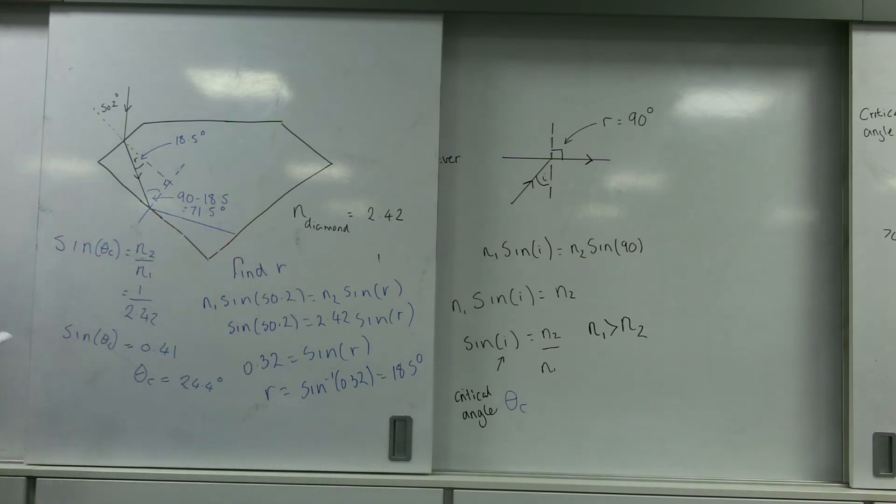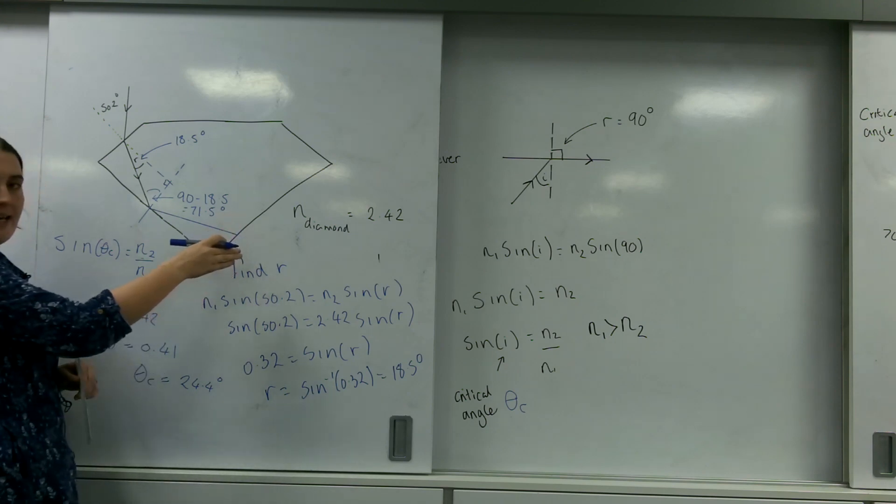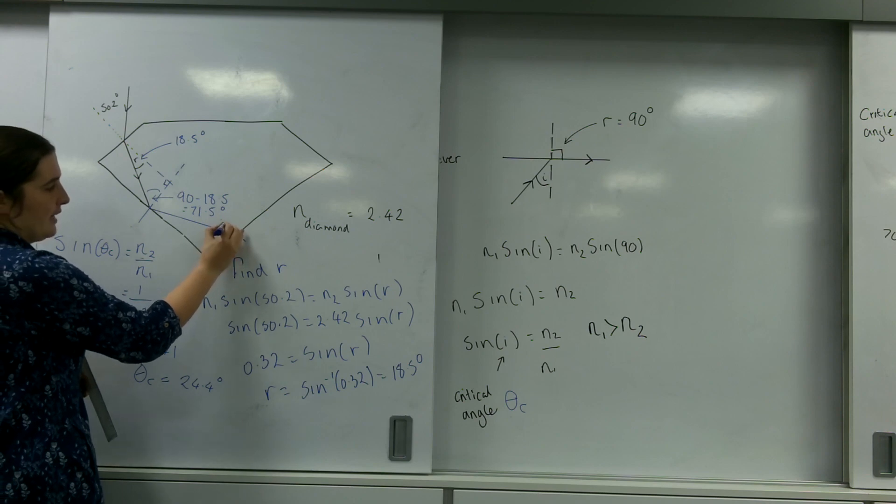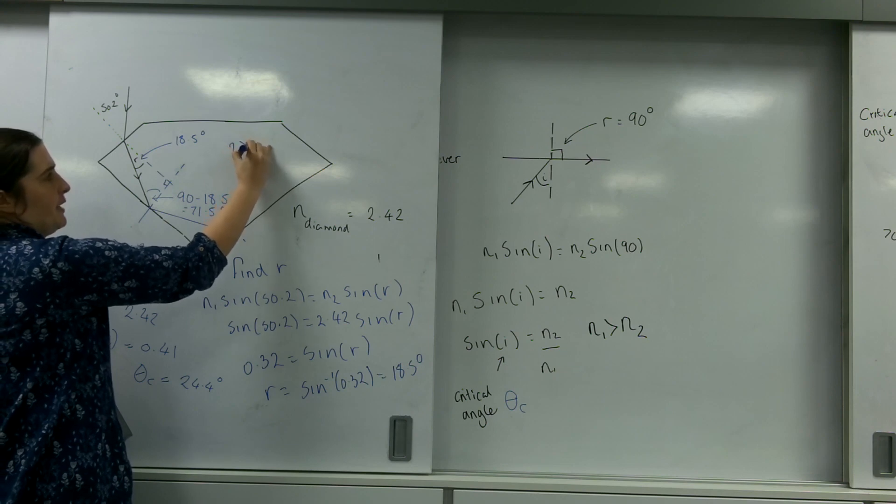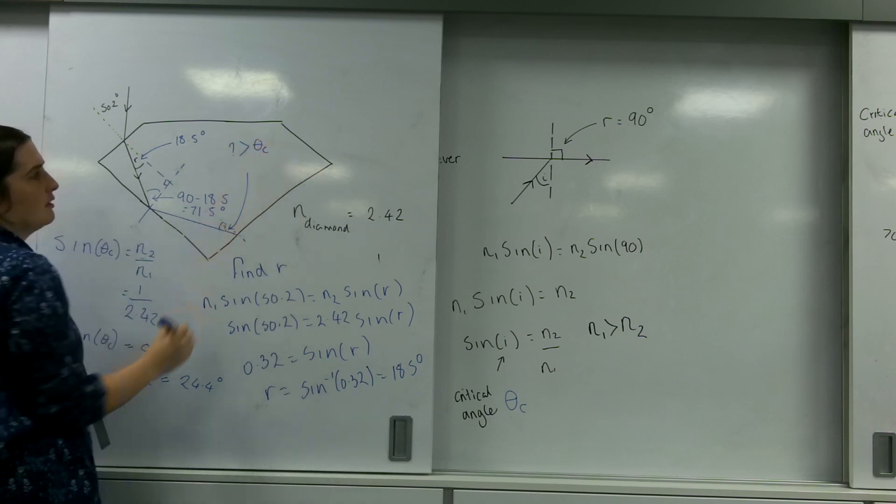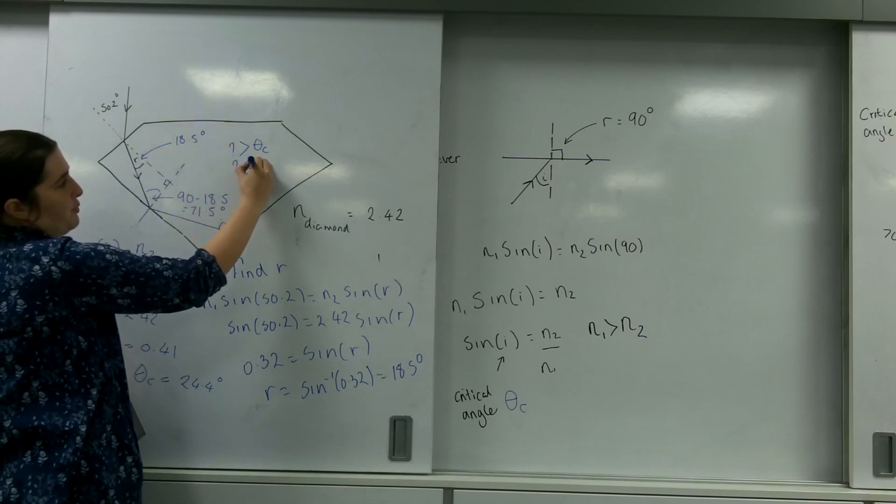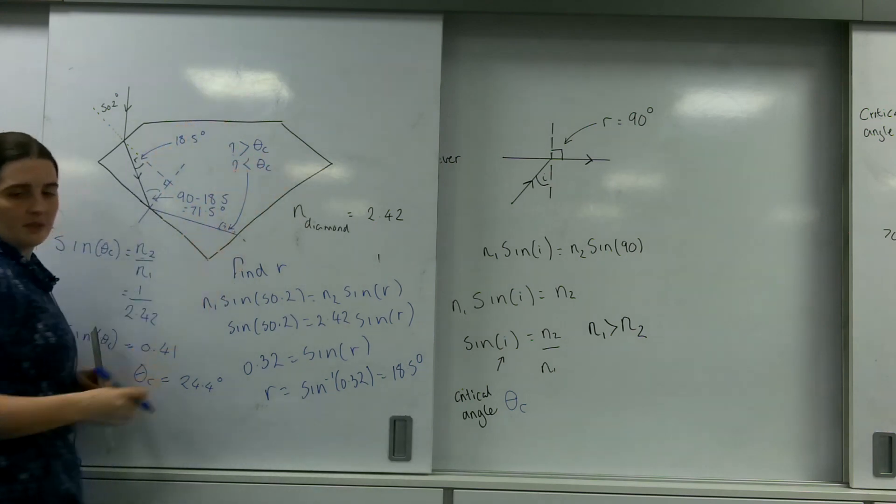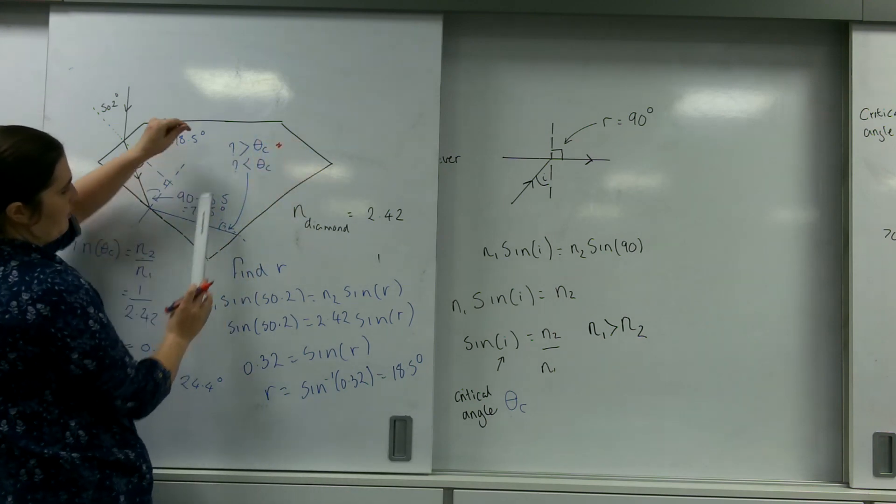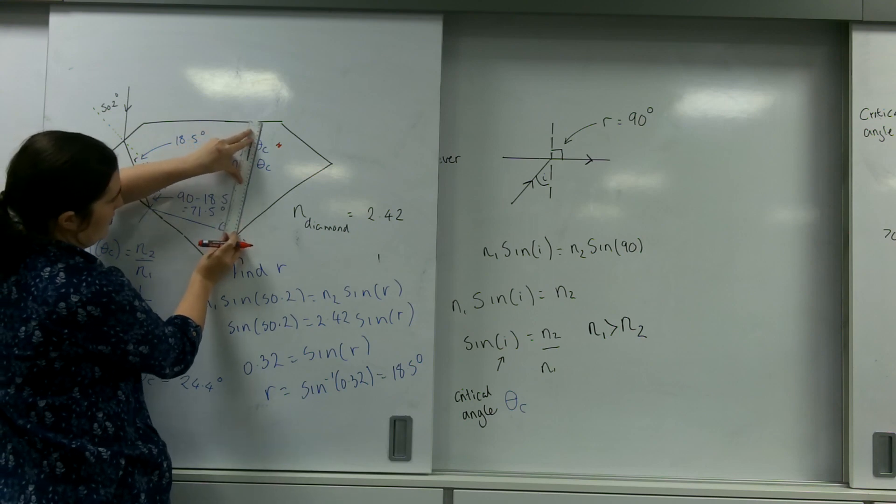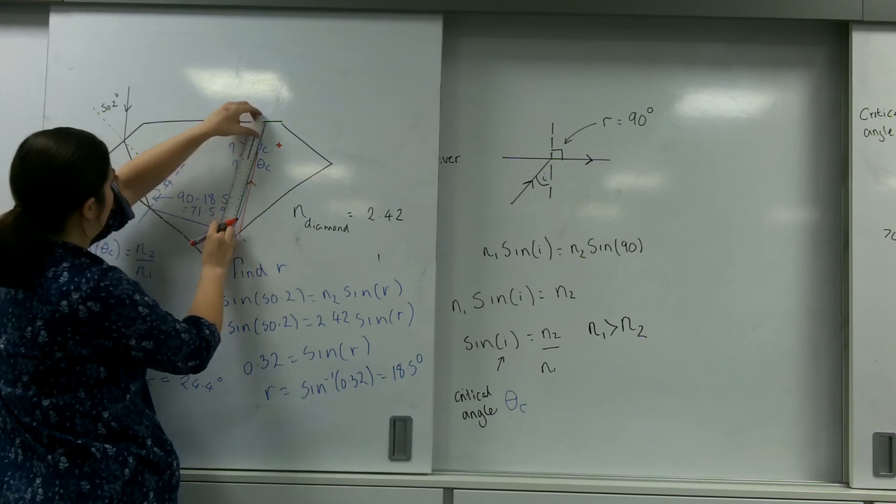Now you could continue this trace, and of course, it depends where it hits here, what that angle is. If this is bigger than the critical angle, it would reflect up. If this was smaller than the critical angle, so if I just draw them over for you, if it was bigger, it's going to be in red. It would come up here.